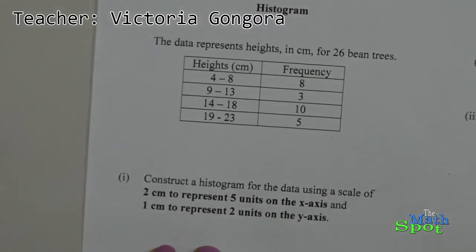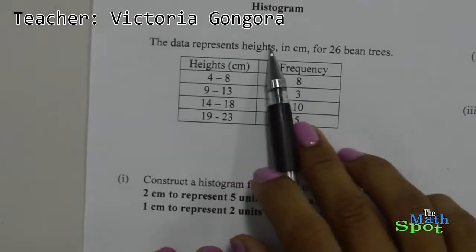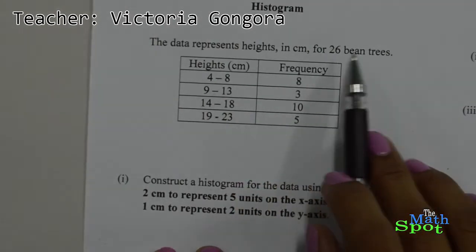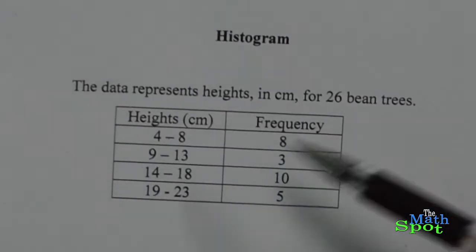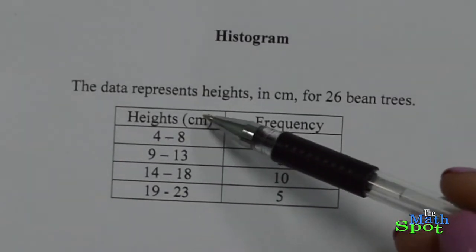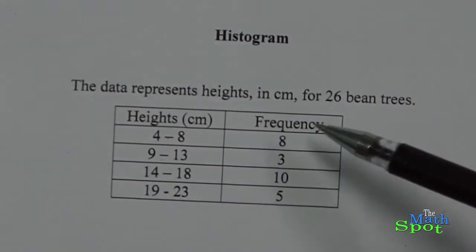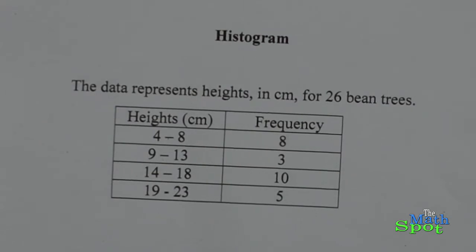Let's construct a histogram for the data which represents heights in centimeters for 26 bean trees. The first column represents heights in centimeters while the second column represents frequency.